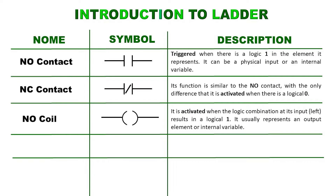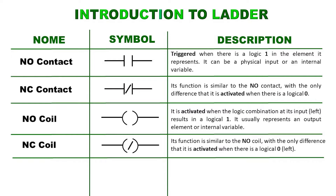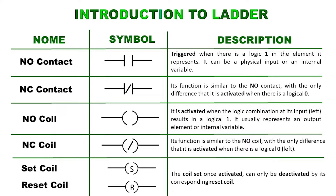Normally open coil: it is activated when the logical combination at its input — left — results in a logical one. It usually represents an output element or internal variable. Normally closed coil: its function is similar to the normally open coil, with the only difference that it is activated when there is a logic zero on the left side. Set and reset coils normally work together since one depends on the other.